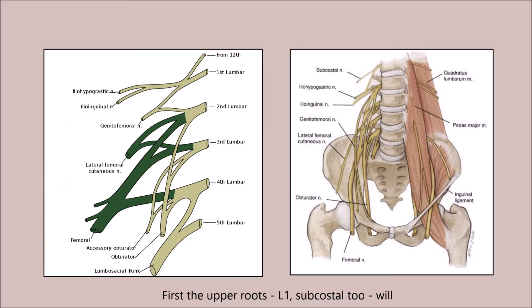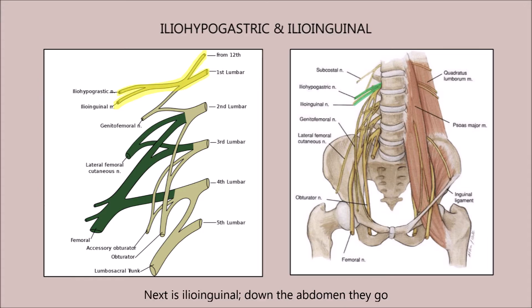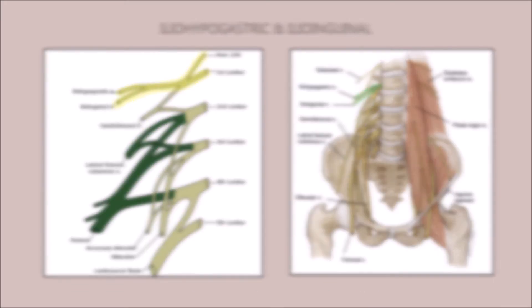First, the upper root cell 1, subcostal 2, will make one branch which then drops, so as psoas major moves along. First to leave this branch is iliohypogastric, next is ilioinguinal — down the abdomen they go.